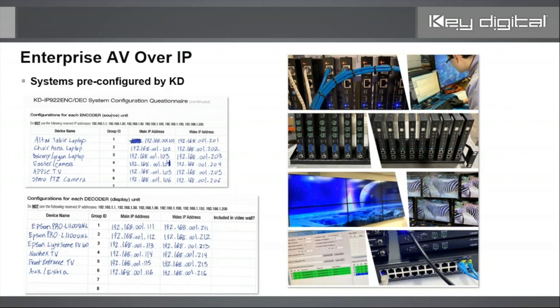This is a questionnaire we ask you to submit when you place your purchase order, and we will pre-configure the entire system for you — even your network switch if you send it to us. We didn't always do this, but when you have three to five settings for every unit times 46 units, that's 200-plus settings. A single mistake is very hard to find, especially remotely for our tech support team. So at no additional cost we decided to set up each unit in the lab at Key Digital, verify the system is working, and catch any RMA-type issues. It's been hugely beneficial to integrators.